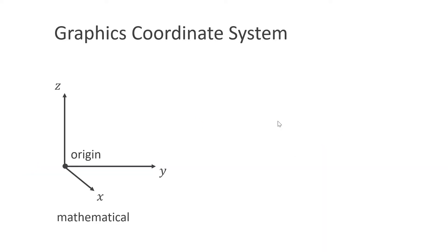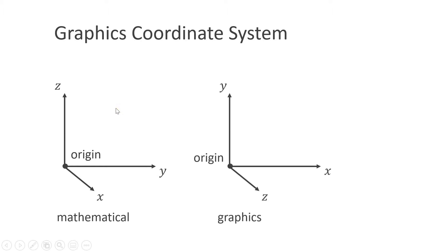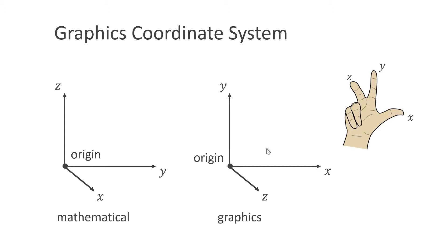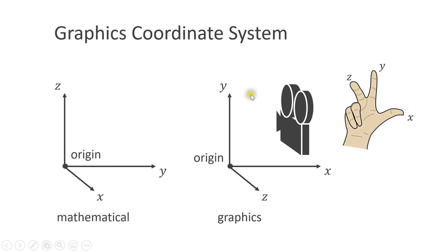As just mentioned, in mathematics the coordinate system is oriented such that the x and y-axis are on the ground and the z-axis points upwards. In graphics, the coordinate system is oriented such that the y-axis points upwards — this is still a right-handed coordinate system. The reason is that a camera sees a 2D coordinate system with x pointing right and y pointing up, and the z-axis points against us, which is why a depth buffer is called a z-buffer.